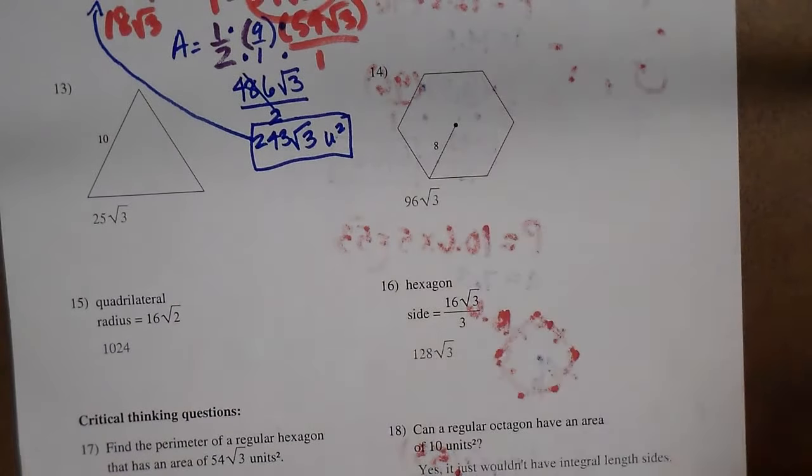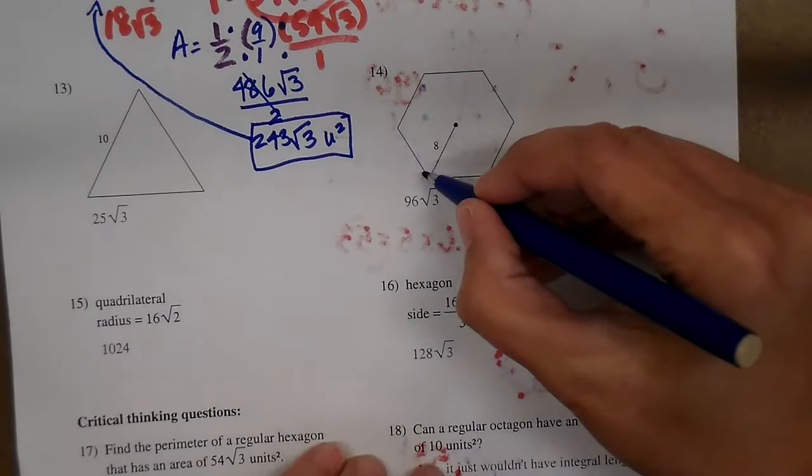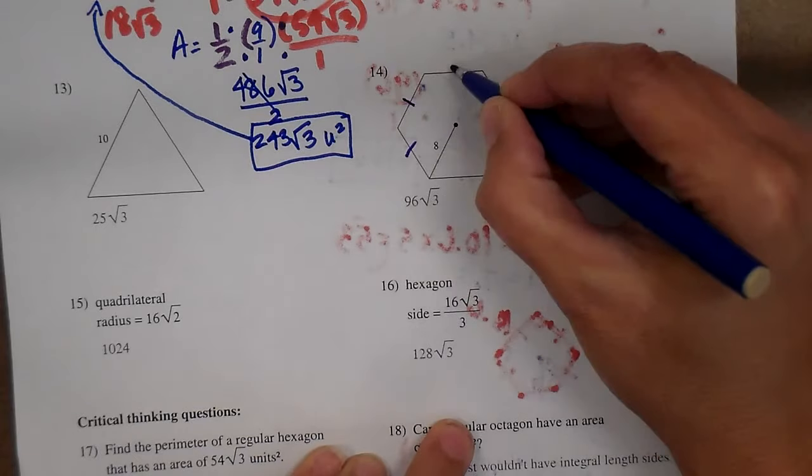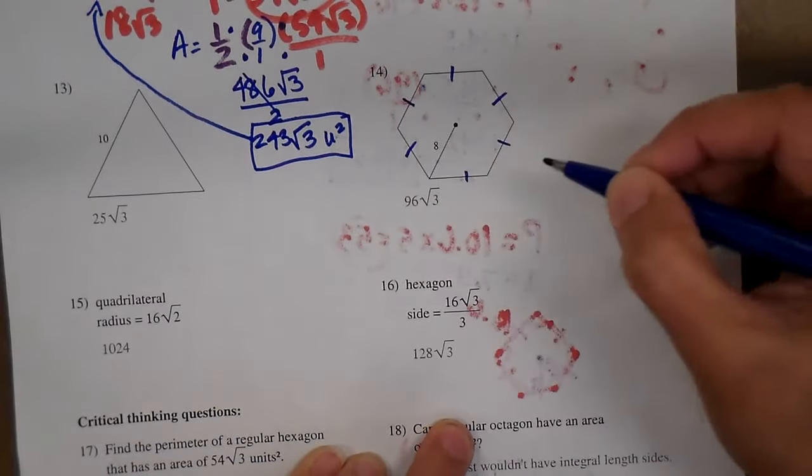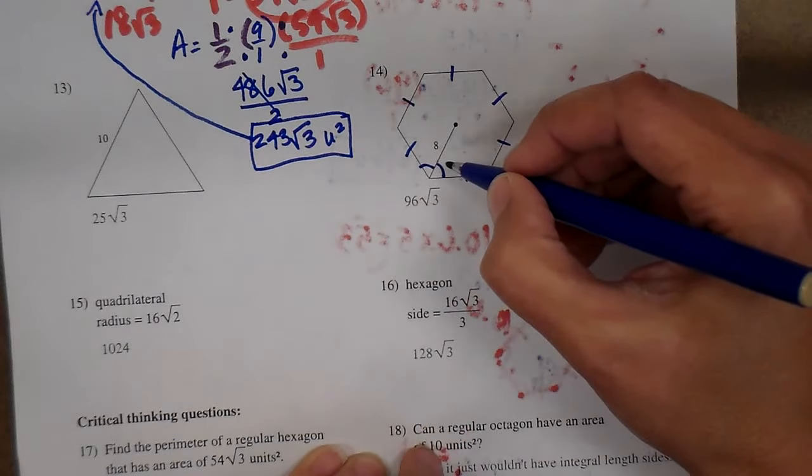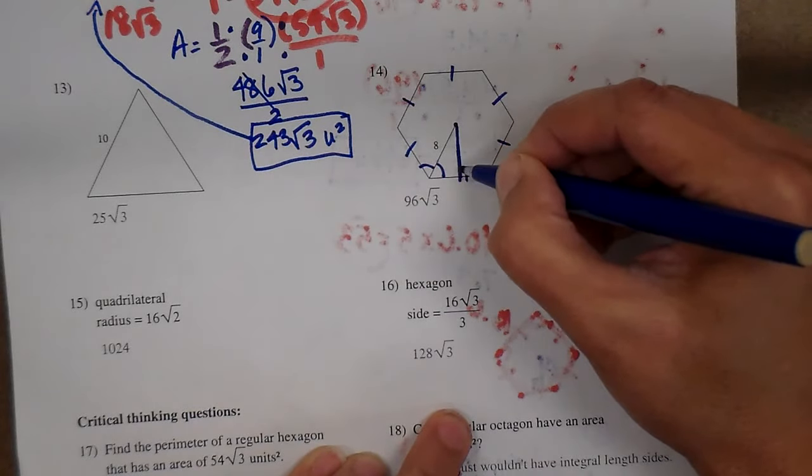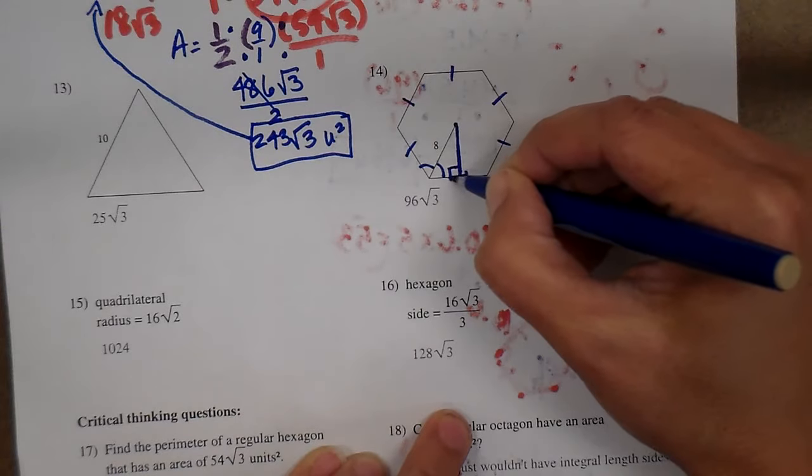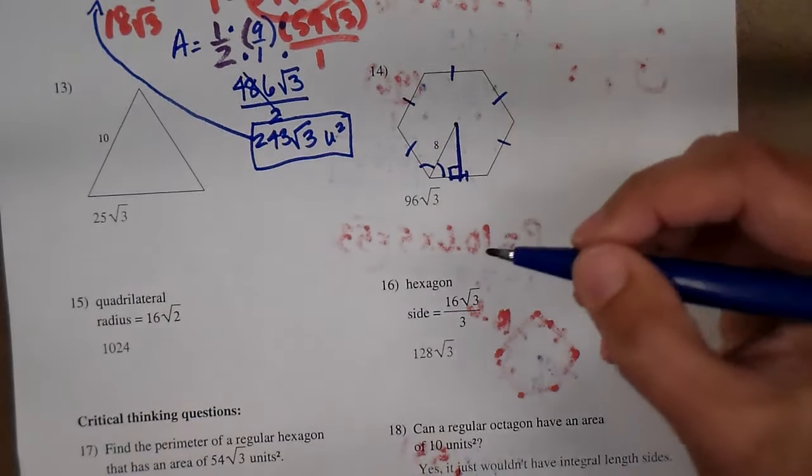Number 14 is a hexagon. I know that it's regular because it tells me at the top they're all regular. So I know they're all the same. I know that the radius cuts that angle in half. But I want the apothem, which is that distance.